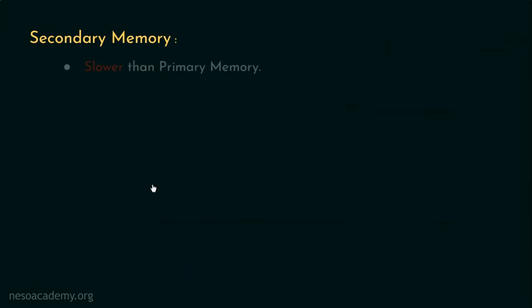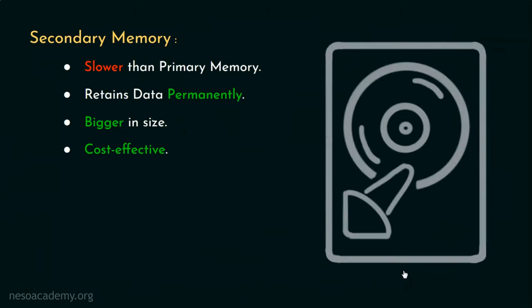Now secondary memories are slower than the main memory. Yet, they can retain data permanently. That is, the data inside them are still there even if the power is off. They are larger in terms of capacity. Also, they are cheaper than the main memory. We will definitely get into the detailed study of various types of secondary memories in our due course. But for the time being, I would like to take an example of one of the most popular secondary storage devices that is the hard disk drive to explain one of the reasons why these are slower compared to the main memory.